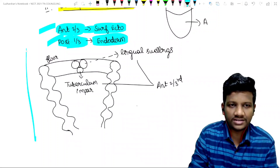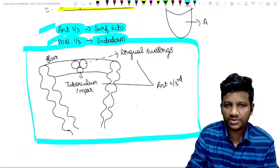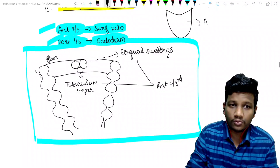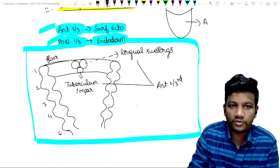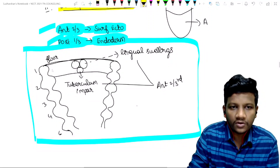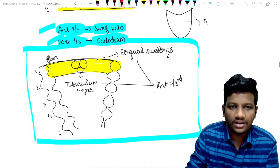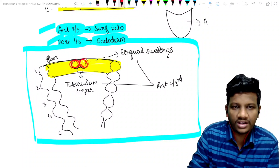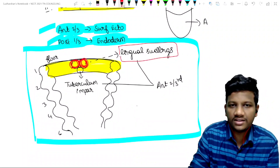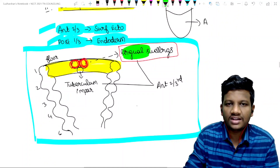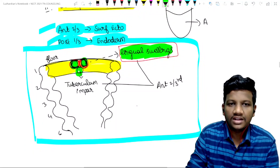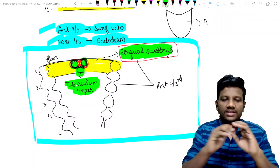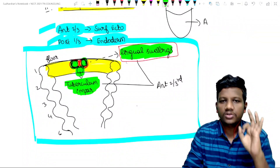This diagram shows the pharyngeal arches — arches one, two, three, four, and six. Focus on the floor of the pharyngeal arch. In the floor of the first pharyngeal arch, we have three swellings: the first two are called lingual swellings, and the third swelling is called tuberculum impar.